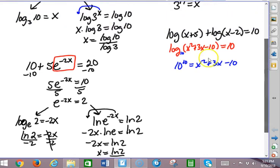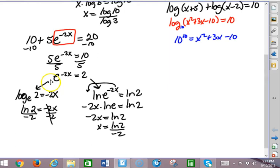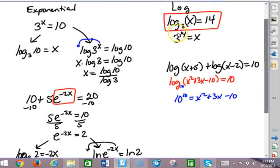So, moral of the story, get down to 1 base raised to 1 exponent equals 1 number, and then rewrite it in log form. Take the log of both sides or rewrite it in log form. When you get a log, get it down to 1 log, 1 log with 1 base of something equals something, and then put it in exponential form to finish solving it.